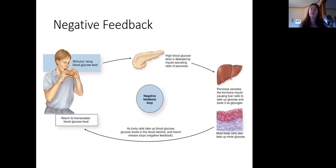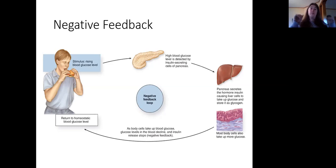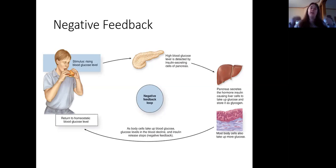For the negative feedback loop, we can look at sugar in the blood. When you eat food, that's going to increase your blood sugar levels. That's not good for your body — your body needs to maintain homeostasis of that blood sugar, keep a relatively constant blood sugar, so that it's delivering the right amount of energy to all the cells in your body.